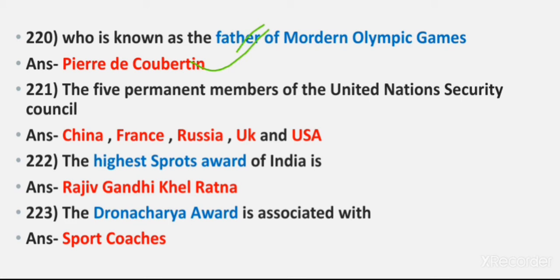Question 221: The five permanent members of the United Nations Security Council. Answer: China, France, Russia, UK, and USA. Question 222: The highest sports award of India is. Answer: Rajiv Gandhi Khel Ratna Award. Question 223: The Dronacharya Award is associated with. Answer: Sports Coach.